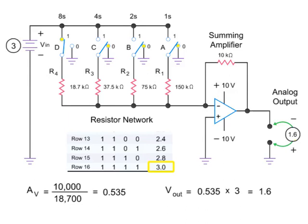Finally, we can generate an output of 3 volts by inputting binary code 1111.